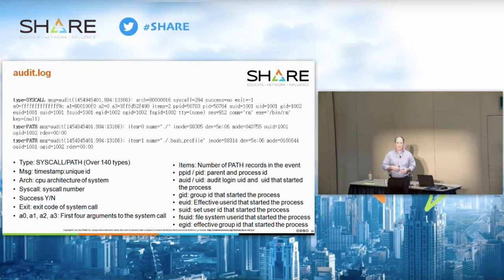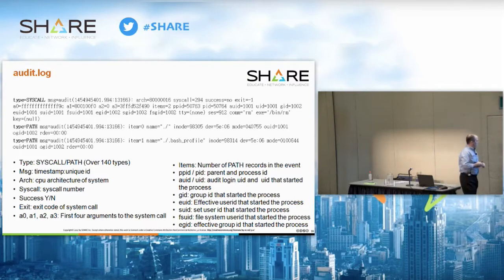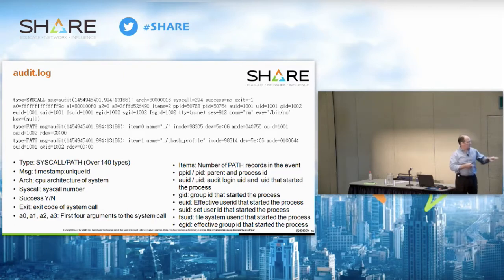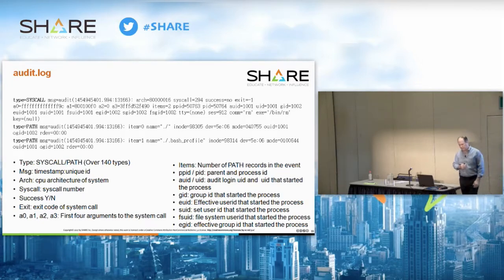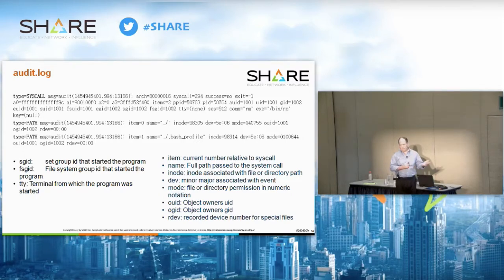Aureport output is very similar to what you'd see in the raw audit log file. The syscall record is on top and then you see the path entries underneath. There are labels for all the different fields — the syscall type, path entries, the arguments to the program, the syscall being made, the process IDs, the effective UID, the login UID (auid). The TTY used, inodes, rdev — all the information you would need is recorded.